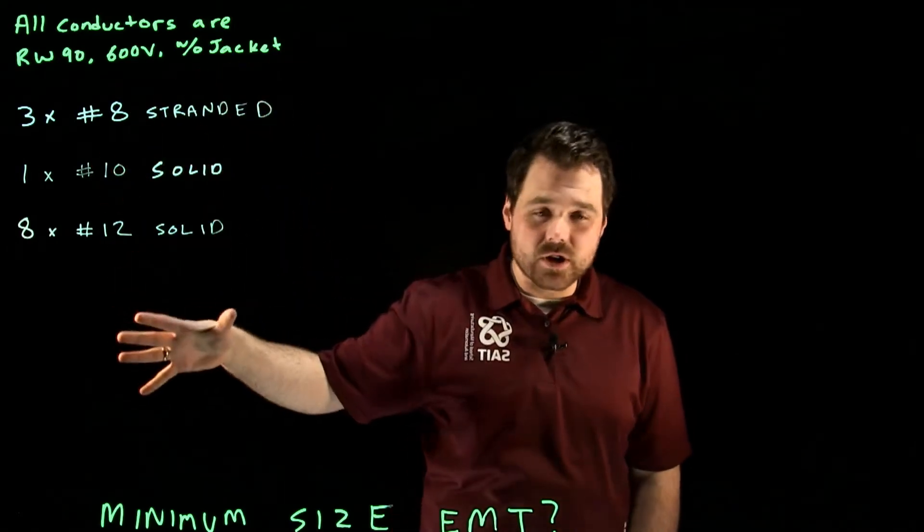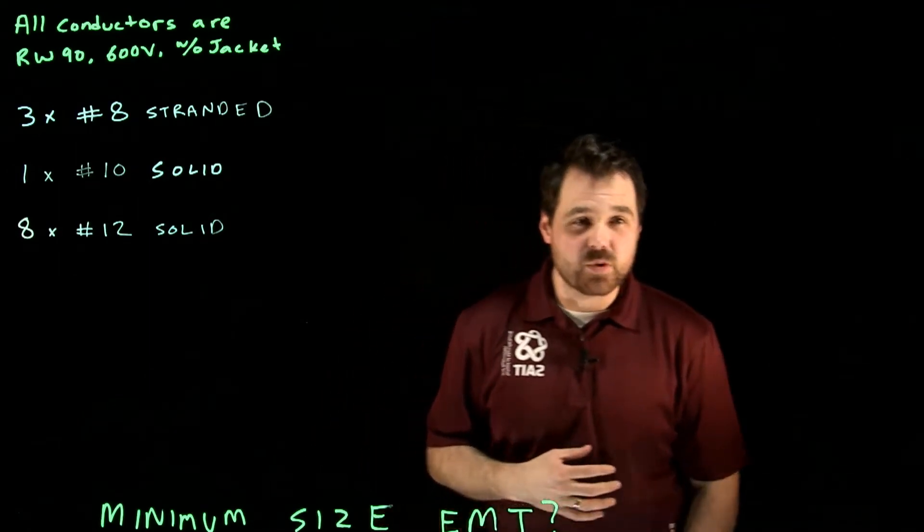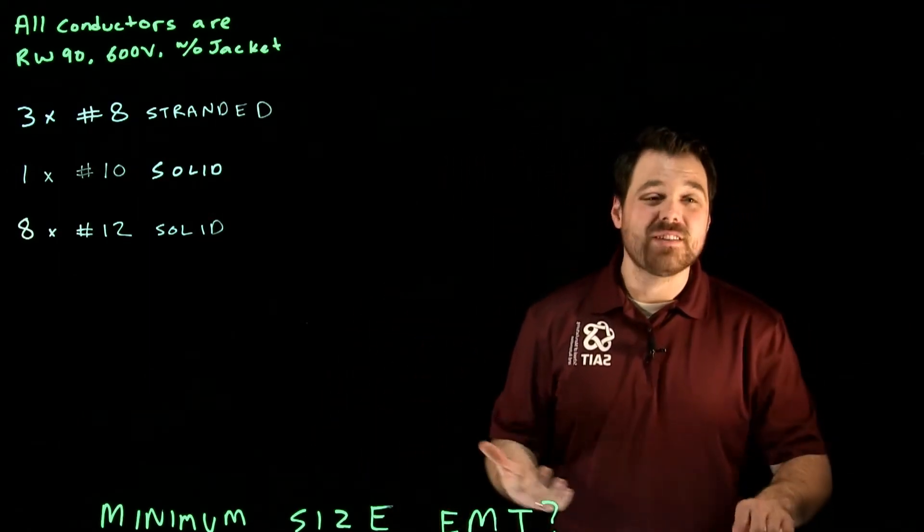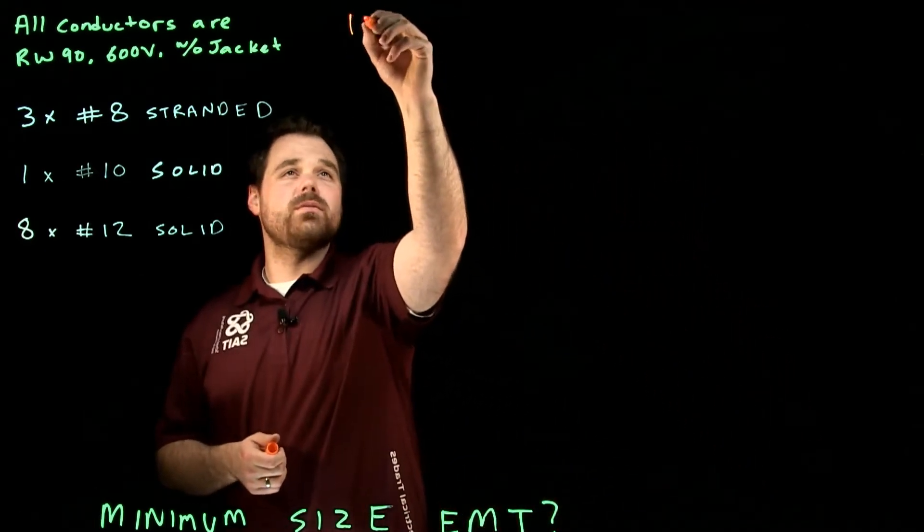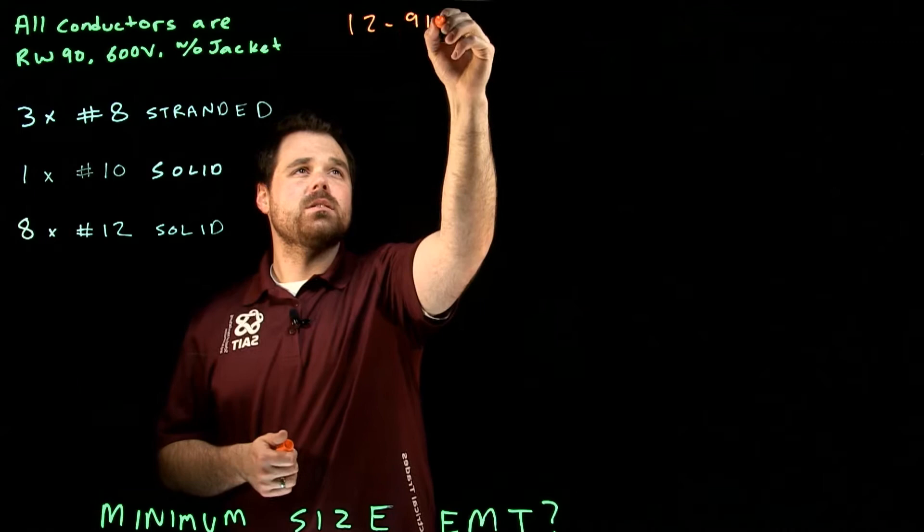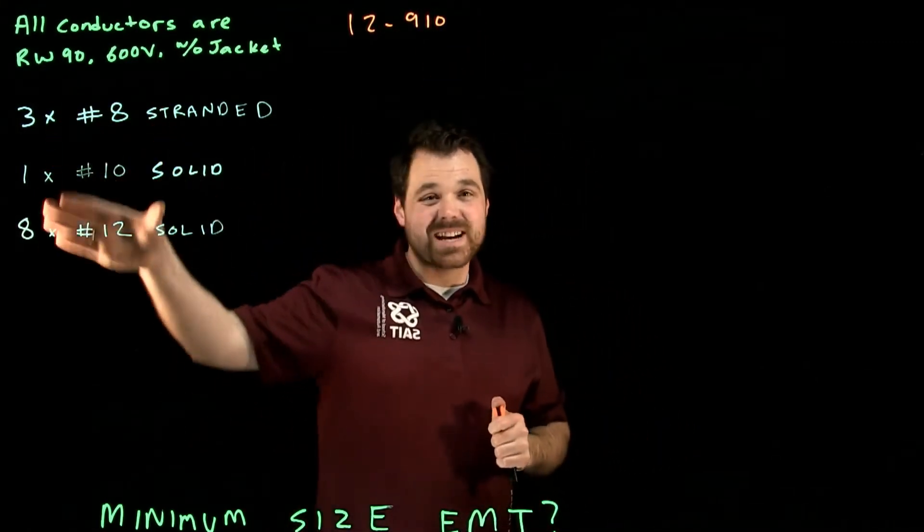We're pulling them into a conduit and we want to know what is the minimum size of EMT that I'm allowed as per 12-900 in the 2015 Canadian electrical code. So we're using 12-910 to size these conductors because there's multiple different sizes of conductors.